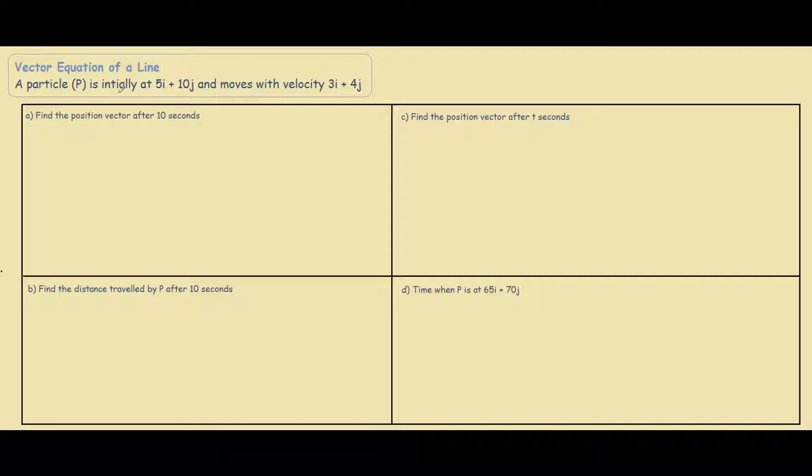We have a particle that is initially at 5i plus 10j, so over here at some random spot, and it moves with a velocity 3i plus 4j.